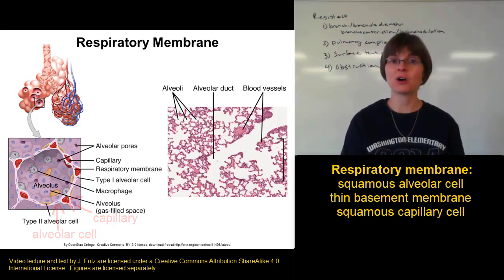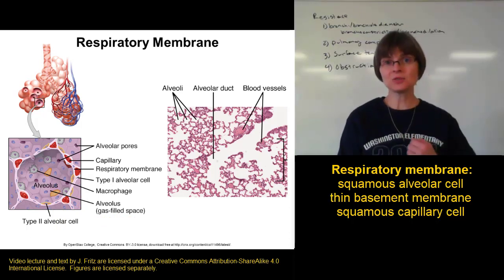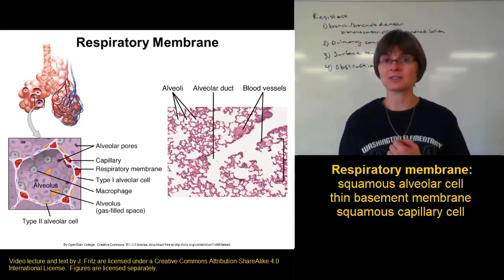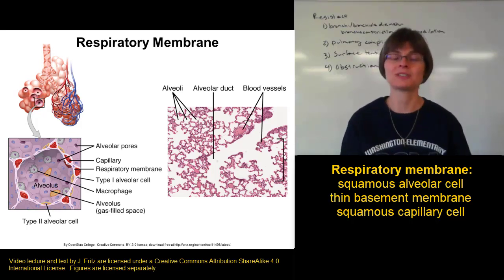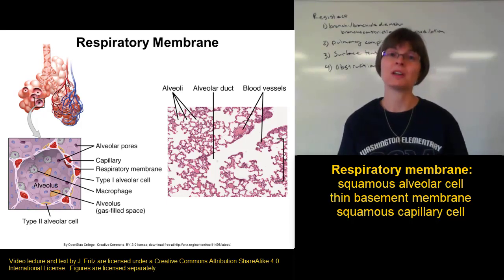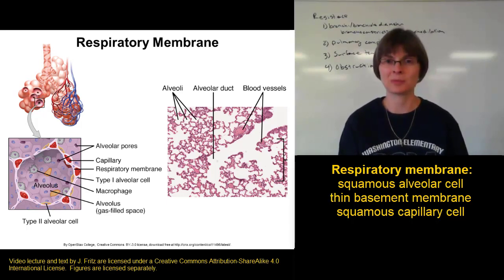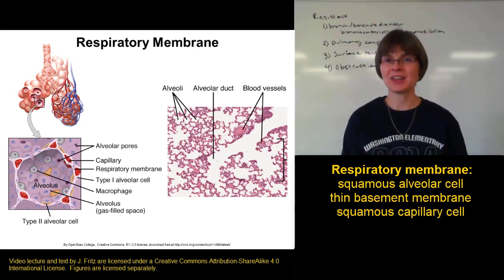So anything that's going to move between the lungs and the blood is going to have to cross several layers of membrane. It's going to have to go from inside the lung into the alveolar cell, out of the alveolar cell on the other side, into the capillary cell, and then out of the capillary cell on the other side into the blood. And then it usually has to go into the red blood cells as well, so that means crossing another membrane. The respiratory membrane is really thin.